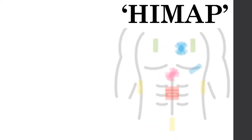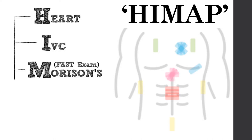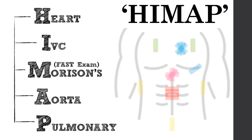Most of the views required in a RUSH exam are views that are already used in other ultrasound studies and are pretty easy to learn. A good mnemonic to remember the views is HIMAP — H-I-M-A-P. HIMAP stands for heart, IVC, Morrison's pouch, aorta, and pulmonary. One quick note: it's always important to take into account the clinical history of the patient and interpret your ultrasound findings in that context. For example, if somebody has heart failure and arrives with dyspnea and hypotension, I may deprioritize looking at the aorta or Morrison's pouch and spend more time focusing on the heart, lungs, and IVC.